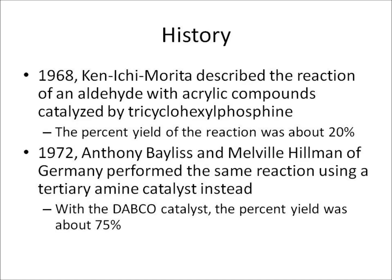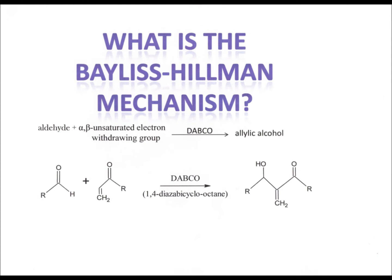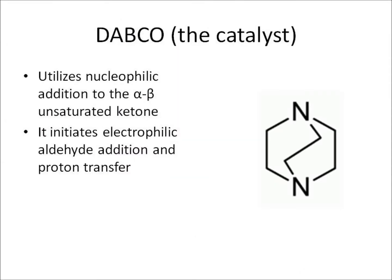The Baylis-Hillman reaction is used to prepare acrylic compounds from the reaction between an alpha, beta unsaturated carboxylic acid derivatives and aldehydes in the presence of a sterically unhindered tertiary amine catalyst. There are three essential components to the mechanism: an activated alkene, an electrophile, and a catalyst. The most effective catalysts are nucleophilic unhindered tertiary amines such as Dabco.